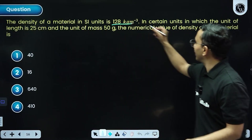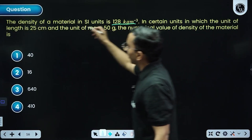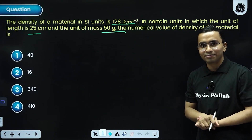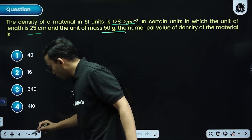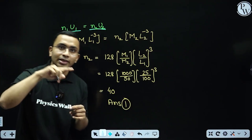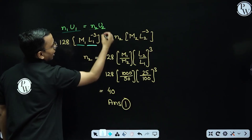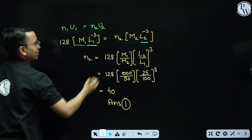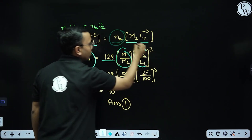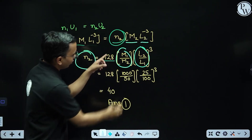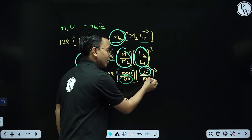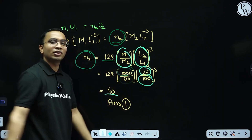Next question: the density of a material is given in SI units. In a certain system where the length unit and mass unit are different, find the numerical value. Using n₁u₁ = n₂u₂ for density (kg/m³ = M₁L₁⁻³), I get n₂ = n₁ × (m₁/m₂) × (l₂/l₁)³. m₁ = 1 kg = 1000 g, m₂ = 50 g, l₂ = 25 cm, l₁ = 100 cm. Putting values gives the answer as 40, which is option one.